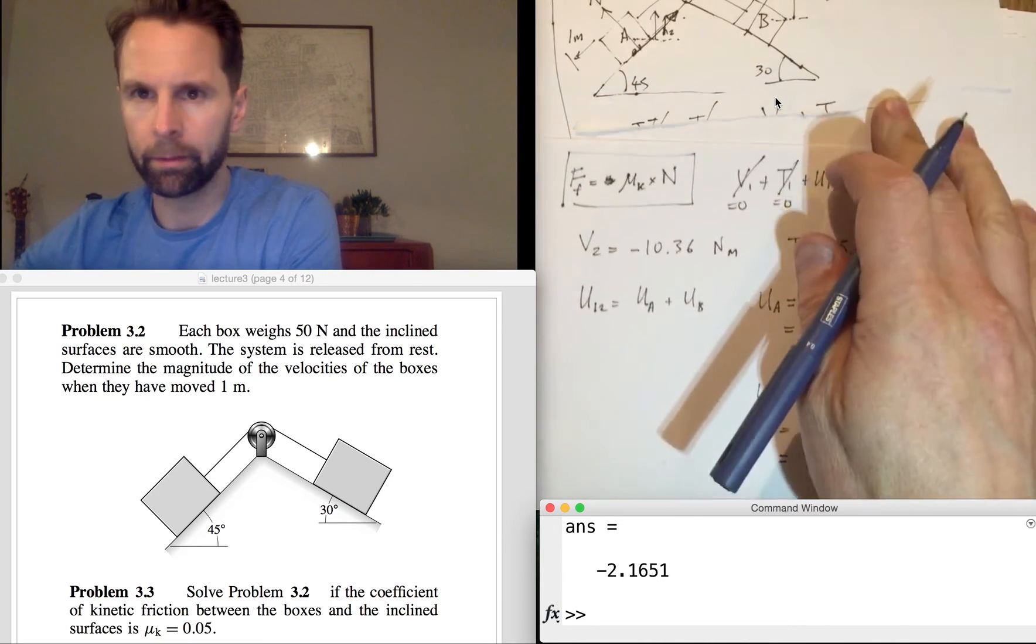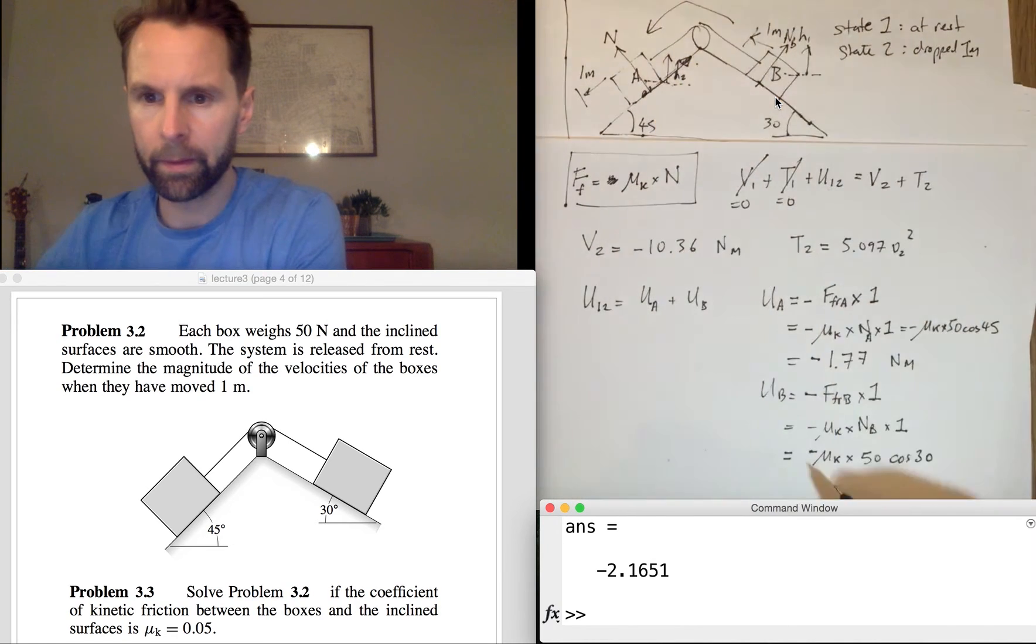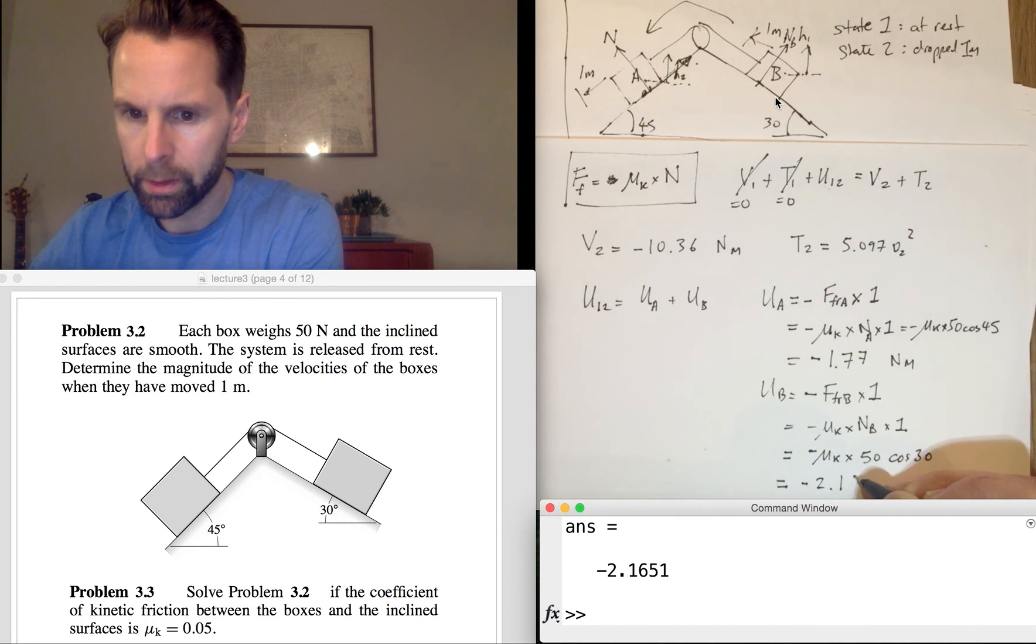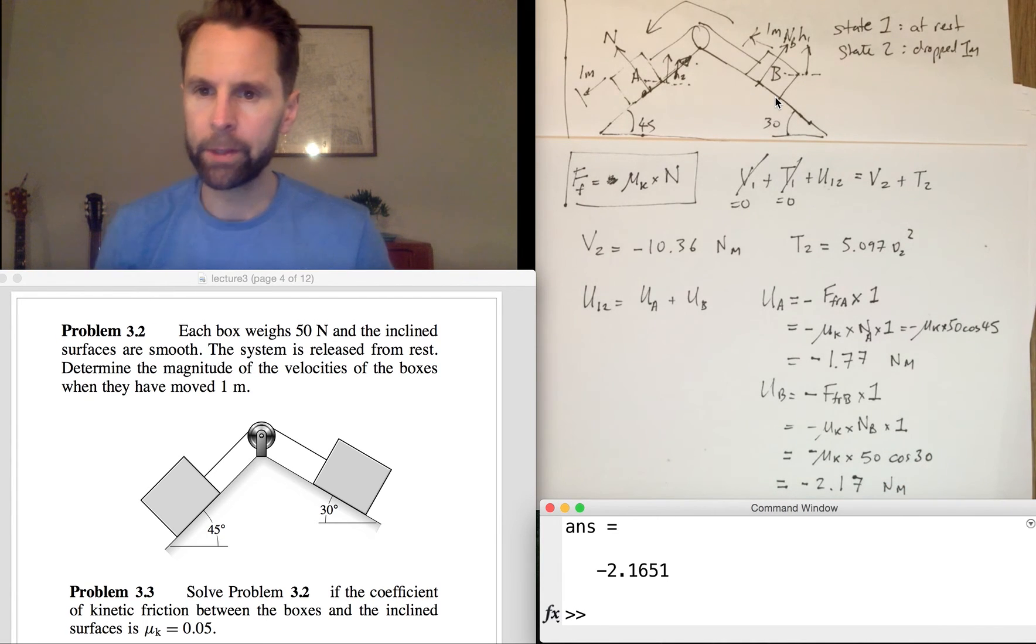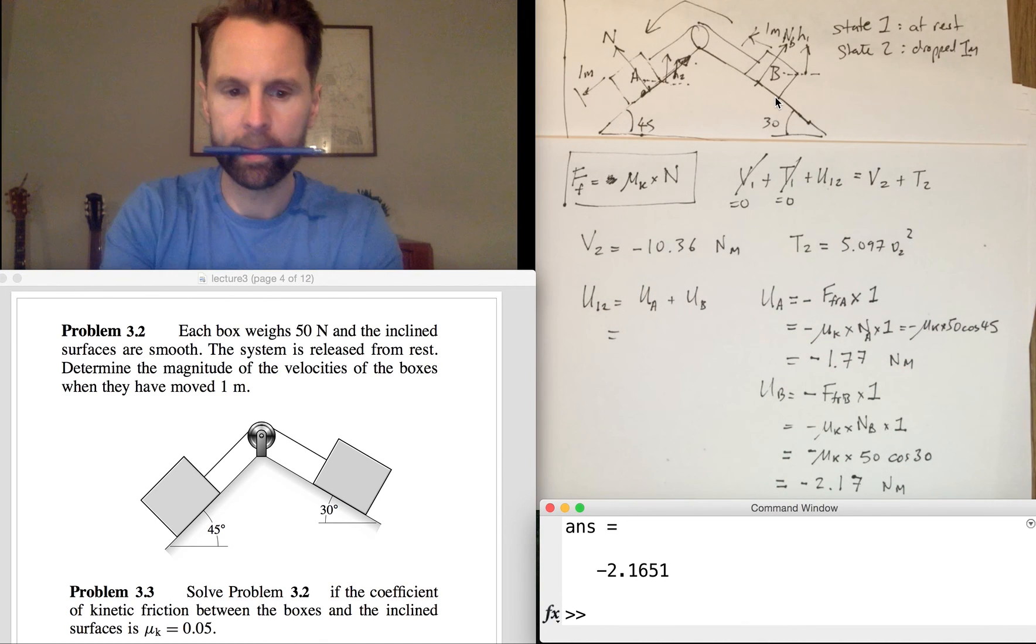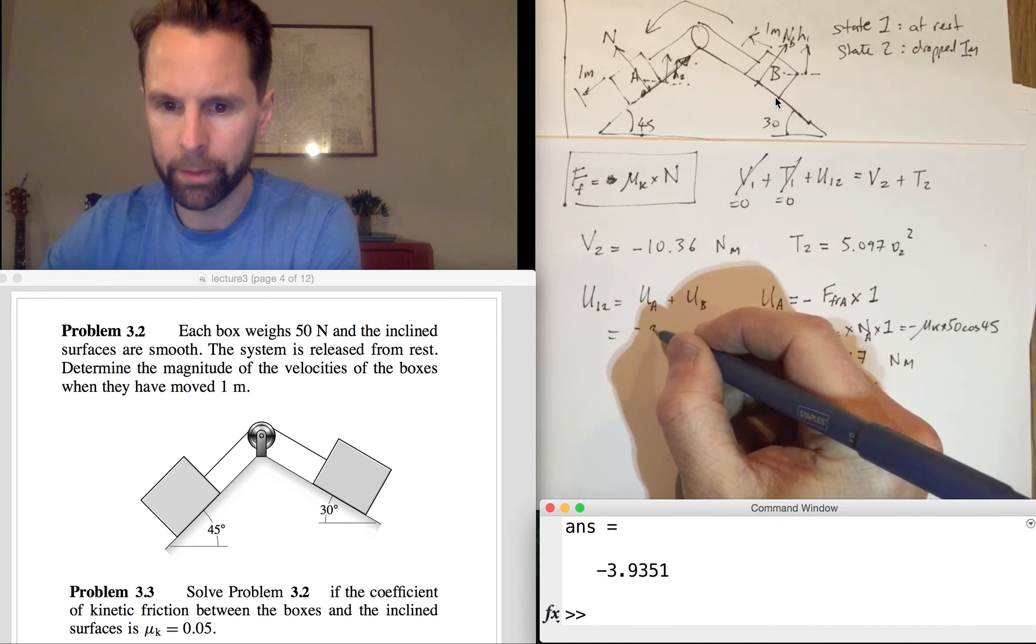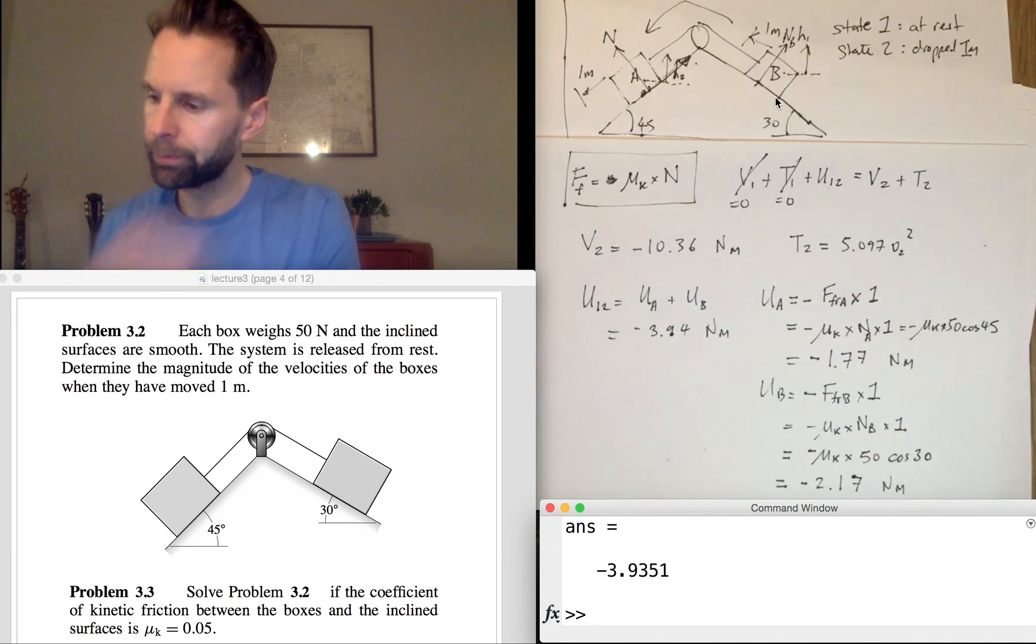So they get added together, that and that. Minus 1.77 plus minus 2.17 gives us minus 3.94 meters.